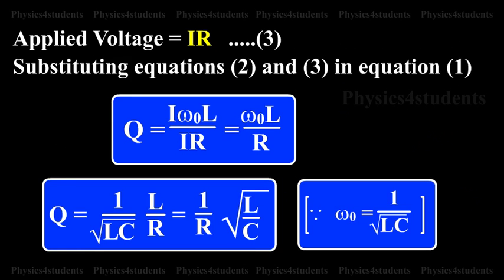Since omega 0 is equal to 1 by root LC, Q is equal to 1 by root LC times L by R, which is equal to 1 by R times root L by C.